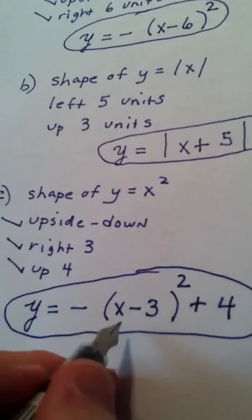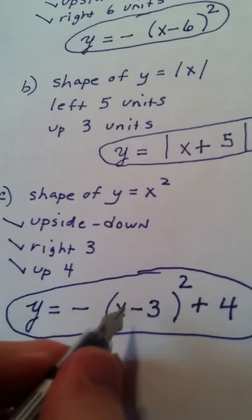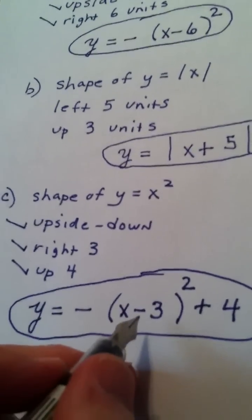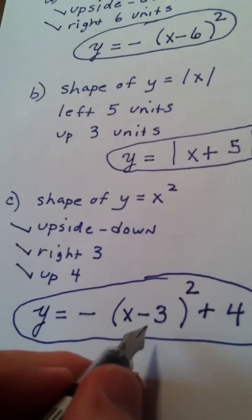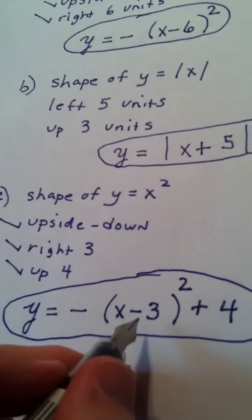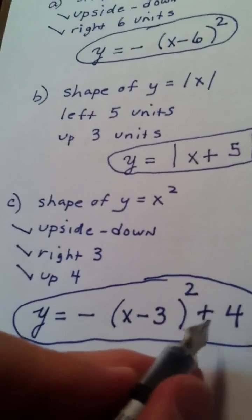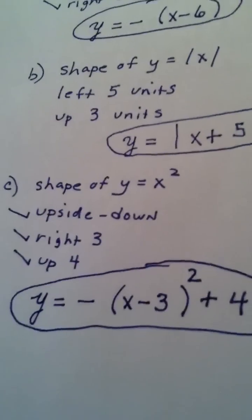x minus three in parens means the graph is being shifted to the right three. What would make this zero? A positive three, and in your brain that's three to the right, and up four would be a plus four. And we're done.